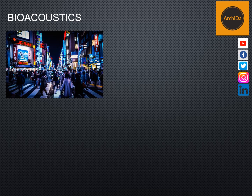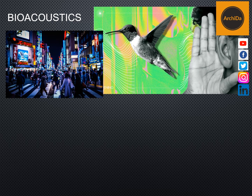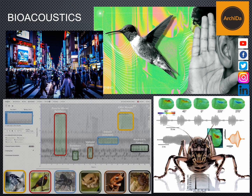Next is bioacoustics. It is a cross-disciplinary science that combines biology and acoustics. Usually it refers to the investigation of sound production, dispersion, and reception in animals, including humans. This involves the neurophysiological and anatomical basis of sound production and detection and the relation of acoustic signals to the medium they disperse through. The findings provide clues about the evolution of acoustic mechanisms and from that, the evolution of animals that employ them.